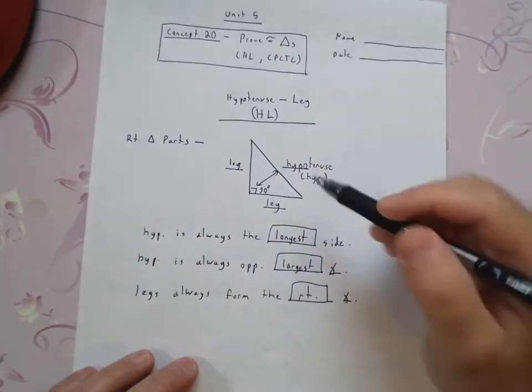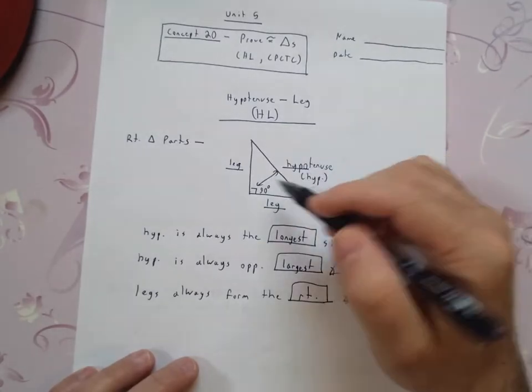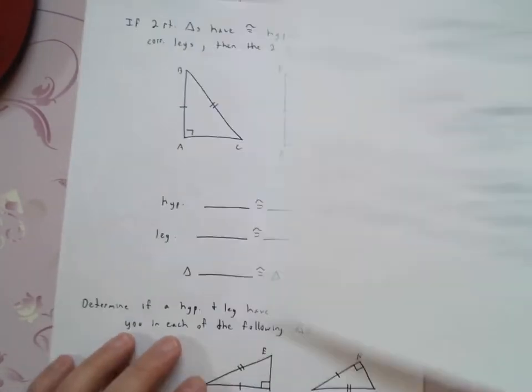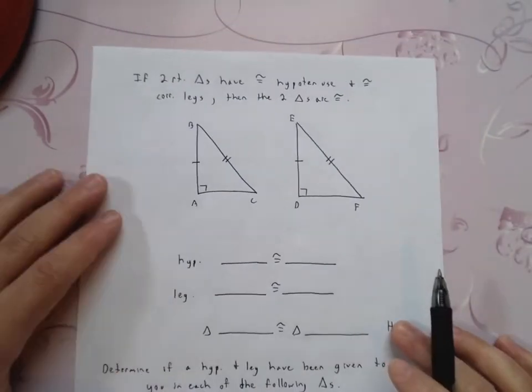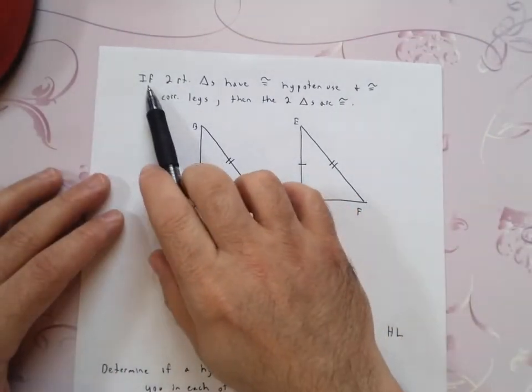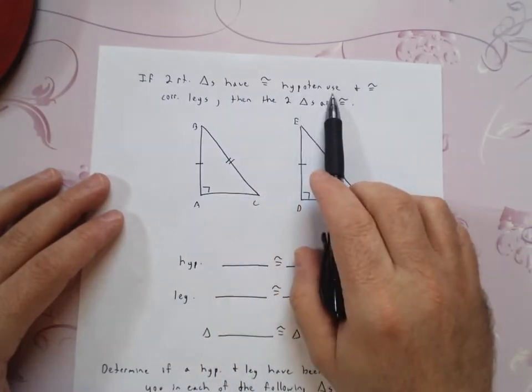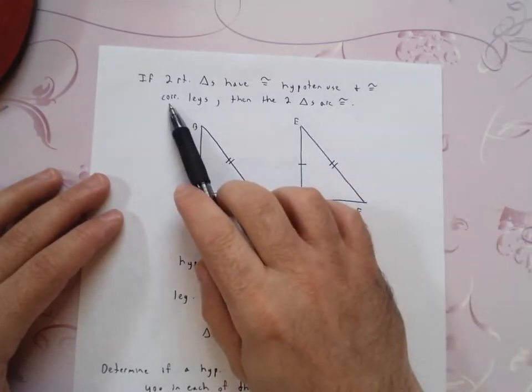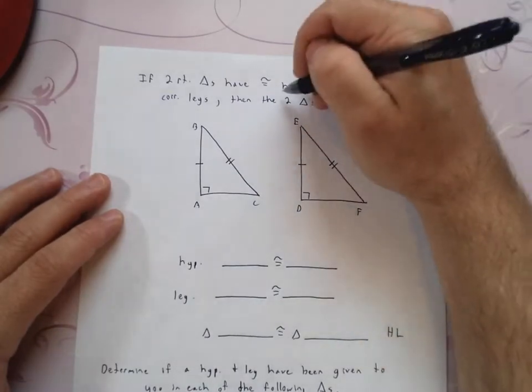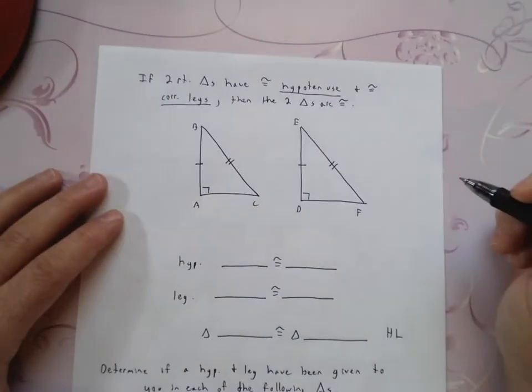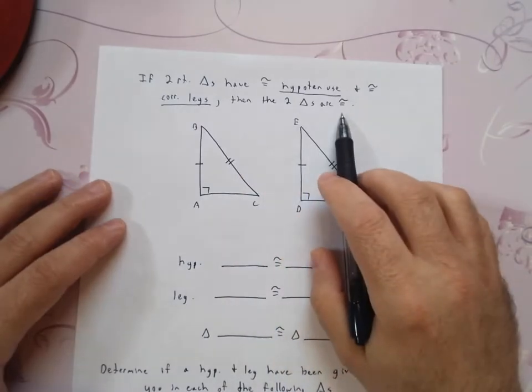So when we talk about HL, we need to make sure that the hypotenuse and one of the legs, corresponding legs I should say, are congruent. So let's jump into that. HL says that if two right triangles have congruent hypotenuse and congruent corresponding legs, so two ideas, the hypotenuse has to be congruent and corresponding legs, then the two triangles are congruent.